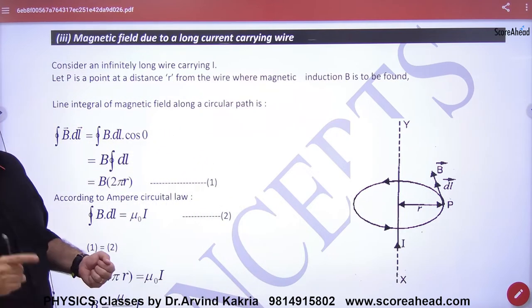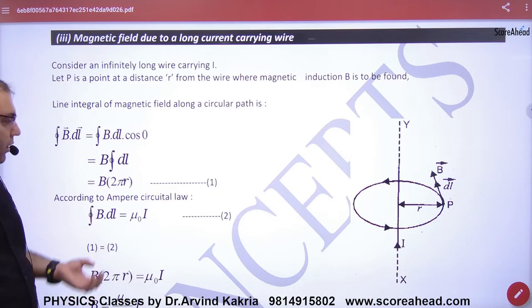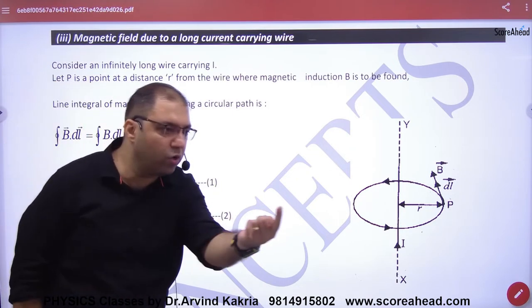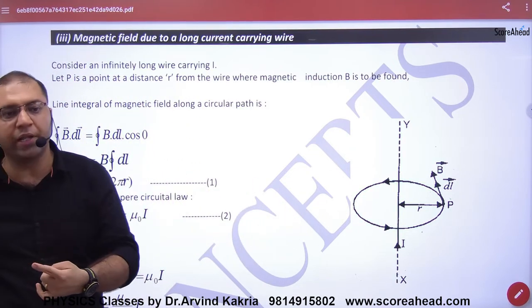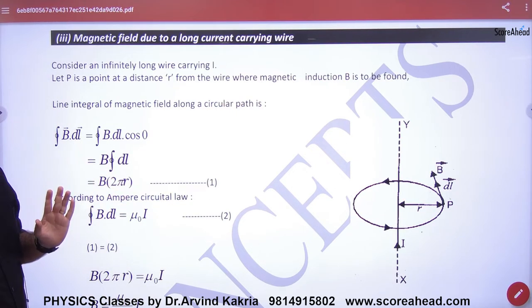B into dl, angle between B and dl is 0. Integration of dl - if the radius of the closed path is r, then what is the length of the closed path? 2πr. So what will it be? B × 2πr, clear here?